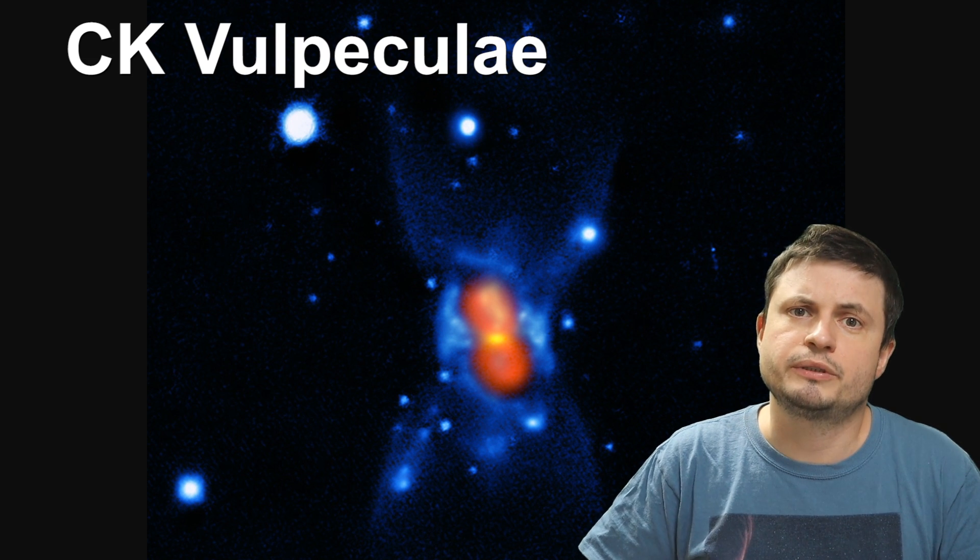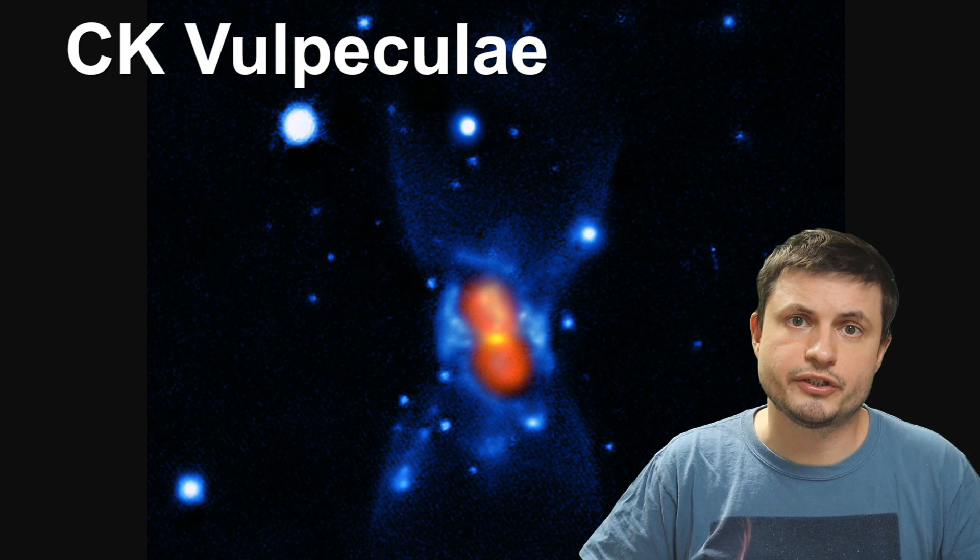The object known as C.K. Vulpeculae that was originally discovered back in 17th century and was essentially classified as a nova, a very cataclysmic event with an extremely bright explosion. And although for many years we thought we knew exactly what this was, turns out it's something completely different. So let's discuss this in a little bit more detail because this is actually a pretty interesting story.